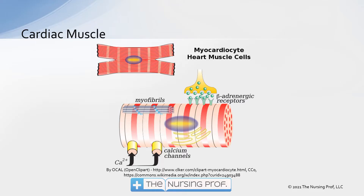Those beta adrenergic receptors are going to be stimulated, which helps to increase our cardiac output when it's needed. However, in a patient who has heart failure, those cardiac cells are not working correctly. So all this beta adrenergic stimulation is going to primarily increase the heart rate rather than increasing the cardiac output.